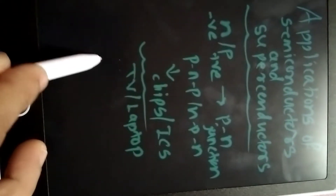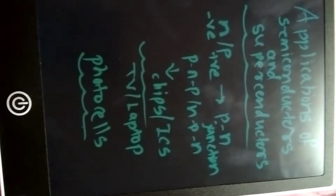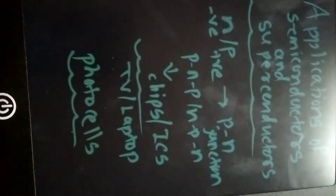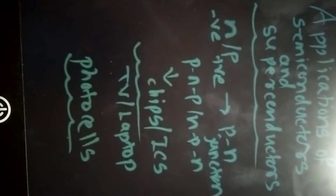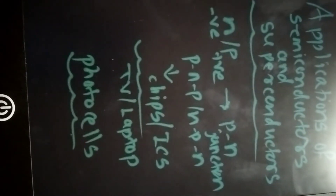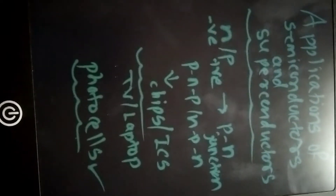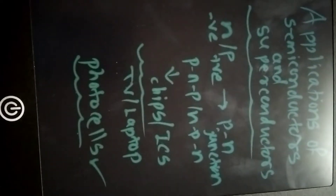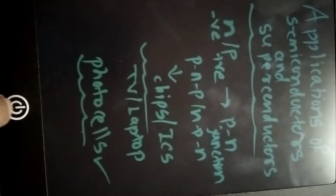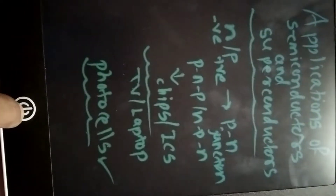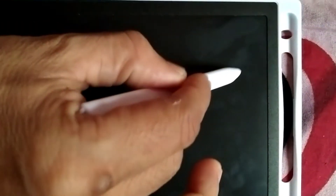Semiconductors are also used in photo cells. Photo cells are nowadays used in alternative energy resources, such as solar cells. They are also used in various electronic instruments. These are the applications of semiconductors.